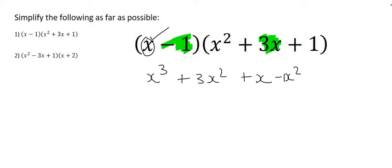Next will be minus 1 times 3x, and that's just going to be minus 3x, and then the last one will be minus 1 times 1, and that's just minus 1.